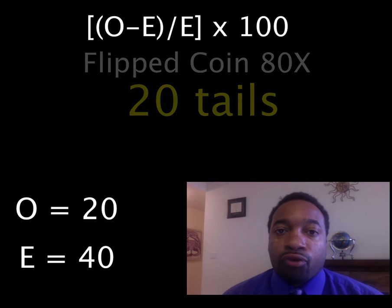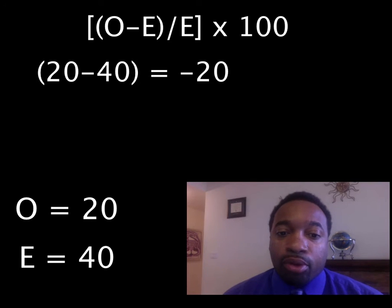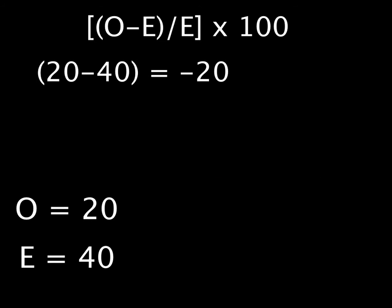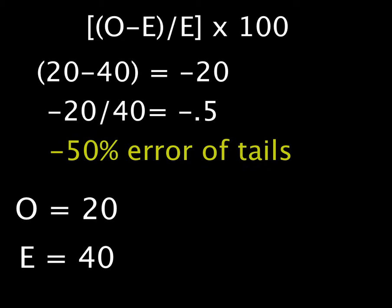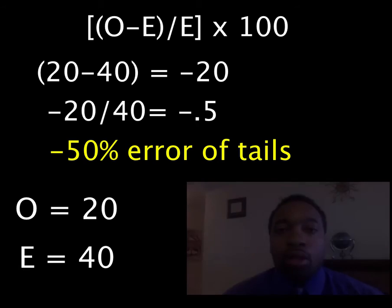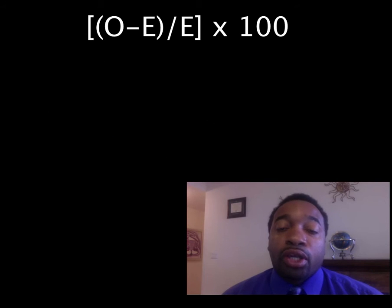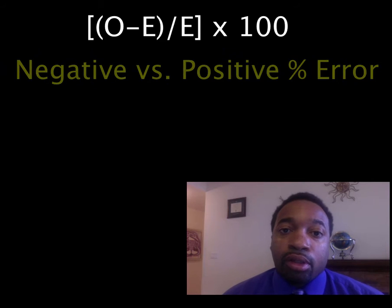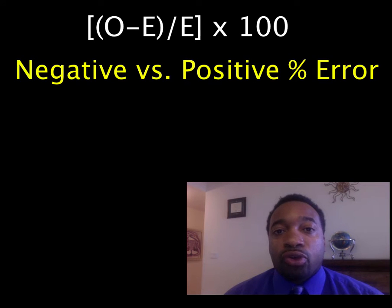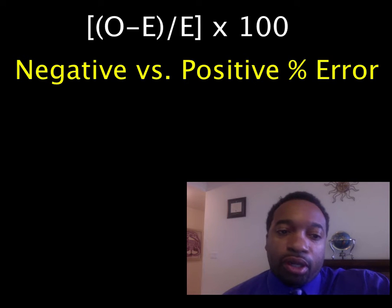So 20 minus 40 gives you a negative number: negative 20. Negative 20 divided by 40 is negative 0.5. Negative 0.5 times 100 is negative 50%. So you notice here that you have a negative percent error. In the first case you got a positive percent error; in this case you got a negative percent error.